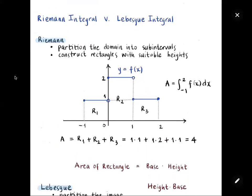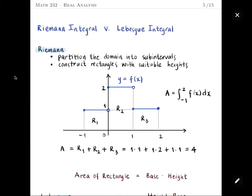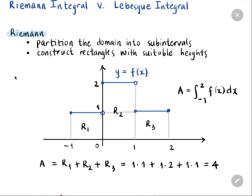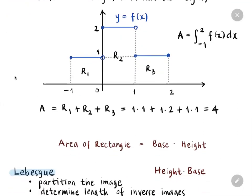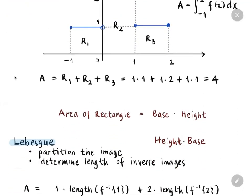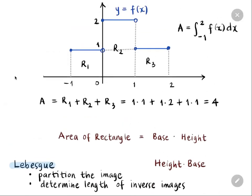To summarize the difference: in Riemann integration we divide the domain, whereas in Lebesgue integration we divide the codomain or image set. For this example we get the same result.